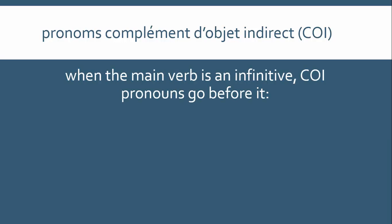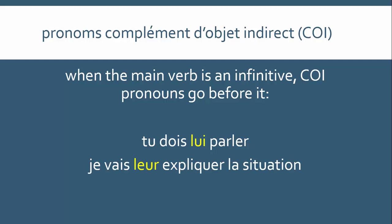When the main verb is an infinitive, indirect object pronouns go before the infinitive. So 'tu dois lui parler' means you have to speak to him or to her. 'Je vais leur expliquer la situation' — I am going to explain the situation to them. And 'elle veut y réfléchir' — she wants to think about it; to think about something is 'réfléchir à quelque chose,' hence the use of 'y' rather than 'le.'